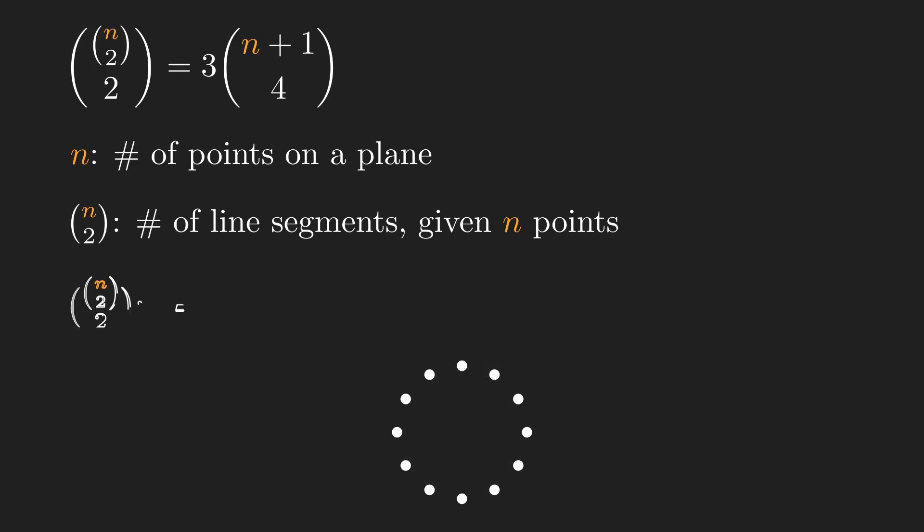Finally, n choose 2 choose 2 will be the number of all pairs of these line segments. For 12 points, there are 2145 distinct pairs of line segments and you can see a handful of them on the screen.